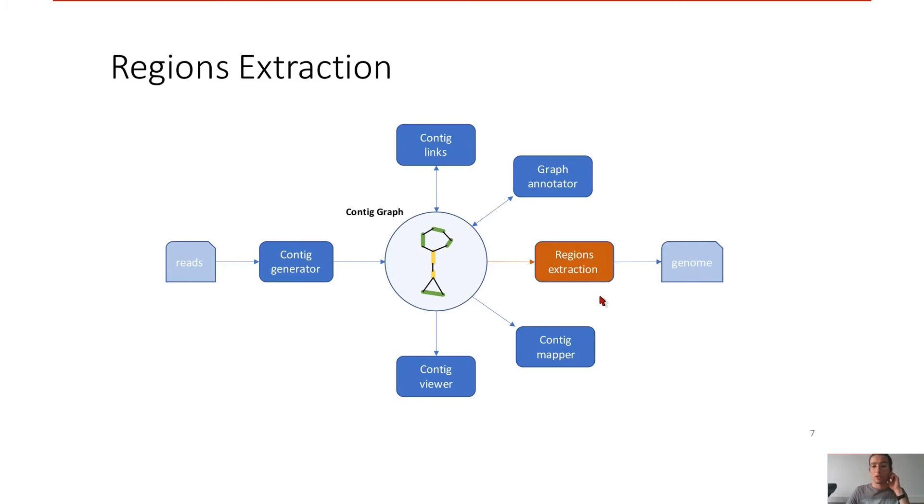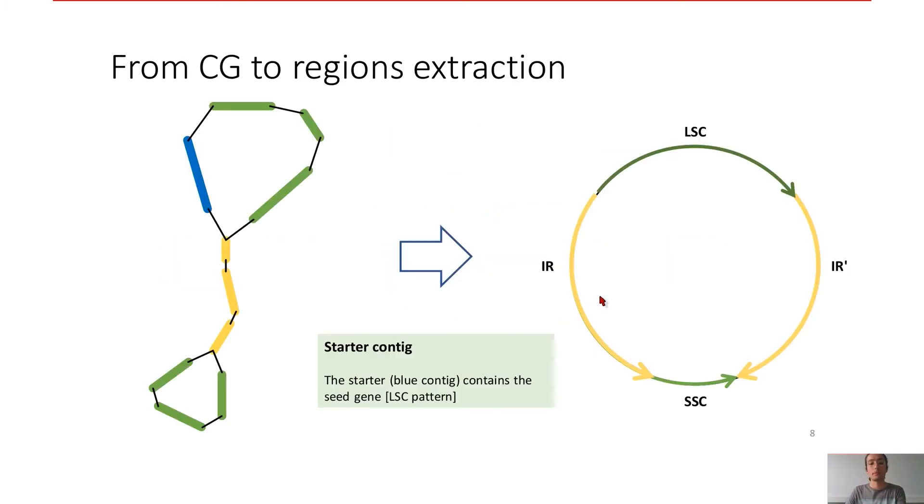So now we want to extract the regions of the chloroplast genome. From the contig graph and from a starter contig, we want to retrieve the four regions of the chloroplast genome.